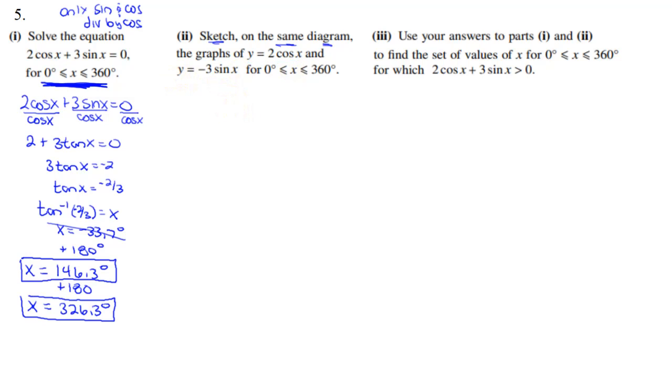Now in part two they want us to sketch both these graphs on the same graph. So let's see here. We'll make our little graph. I can see the amplitudes. The midline is 0 for both of them. I see the period is 360 for both of them.